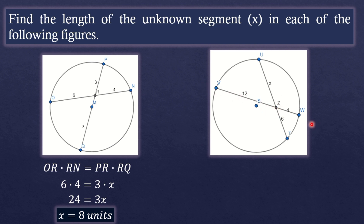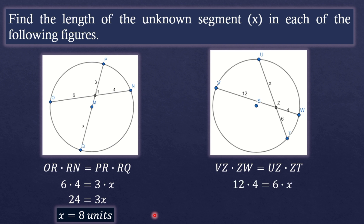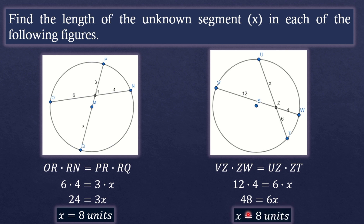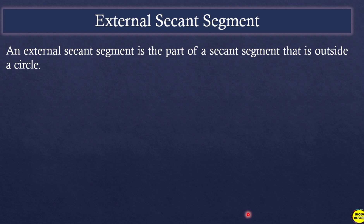Next figure: VW intersects UT at point Z. The given measures are: VZ is 12, ZW is 4, UZ is x (what we need to find), and ZT is 6. Applying the theorem: VZ times ZW equals UZ times ZT. So 12 times 4 equals x times 6. Simplifying: 48 equals 6x. Dividing both sides by 6 gives x equals 8 units.